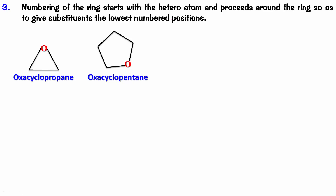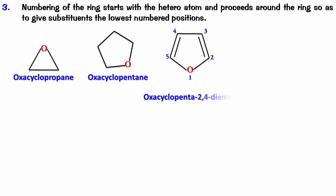Let's take an example with double bonds — we have to number this because of the double bonds. We start from oxygen, which is numbered one, and can go clockwise or anticlockwise. The name always starts with oxa. This is a cyclopentane ring with double bonds at positions two and four, so the name is oxacyclopenta-2,4-diene.